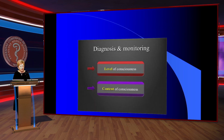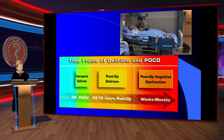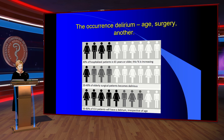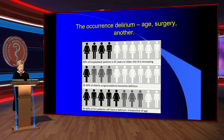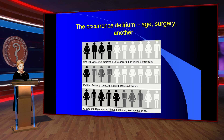Diagnosis involves assessing level of consciousness and content of consciousness. 40% of hospital patients are 65 years or older. 10–40% of elderly surgical patients develop delirium, and 50–80% of ICU patients will have delirium irrespective of age, because ICU patients receive more sedatives, hypnotic drugs, benzodiazepines, antibiotics, and other agents.